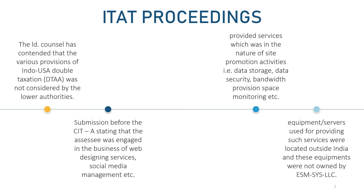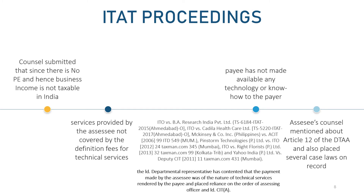It was submitted that ESM-SYS LLC had provided services in the nature of site promotion activities, i.e., data storage, data security, bandwidth provision, space monitoring, etc. It was also submitted that the equipment or servers used for providing said services were located outside India and were not owned by ESM-SYS LLC USA. The counsel submitted that such payment made was in the nature of business income and, since there was no permanent establishment in India, tax was not required to be withheld.